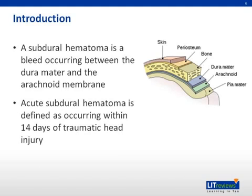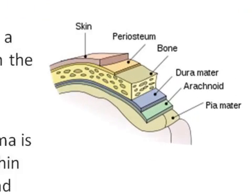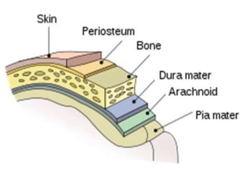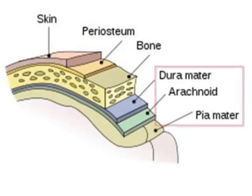A subdural hematoma is a bleed occurring between the dura mater and the arachnoid membrane. To the right is a simple diagram reviewing the layers surrounding the brain. From external to internal, there is the skin, followed by the periosteum, and deeper to that is the bone. Below the skull lies the meninges, which consists of the dura mater, arachnoid mater, and pia mater.